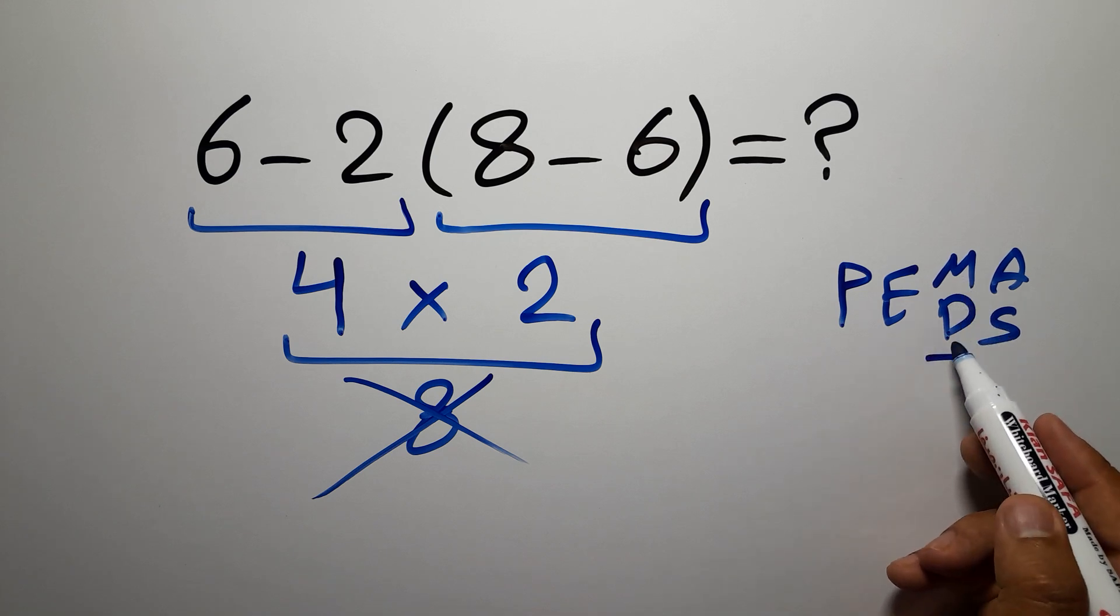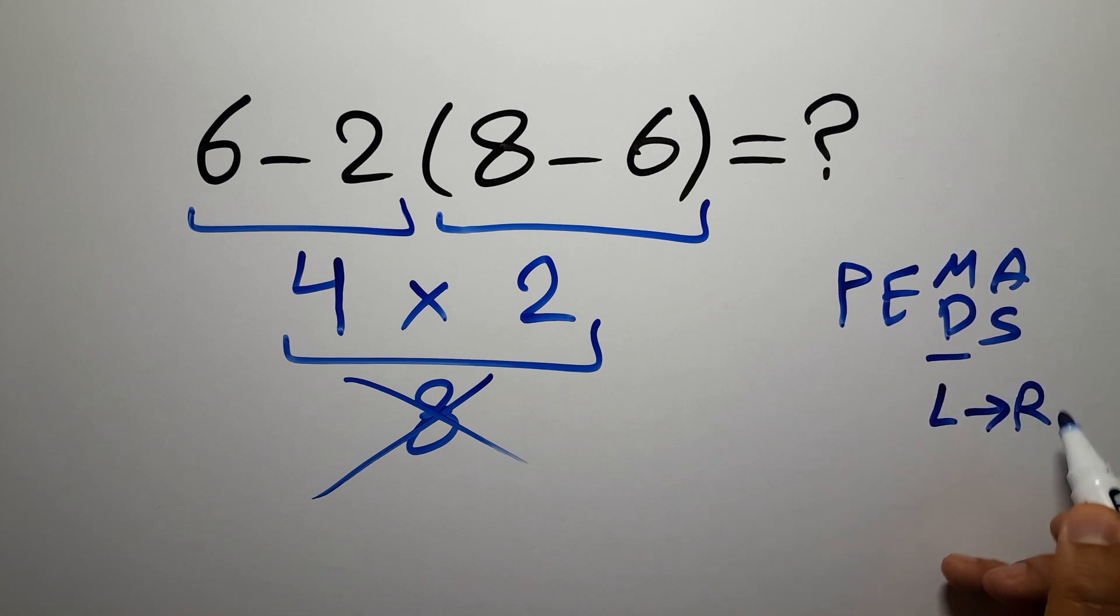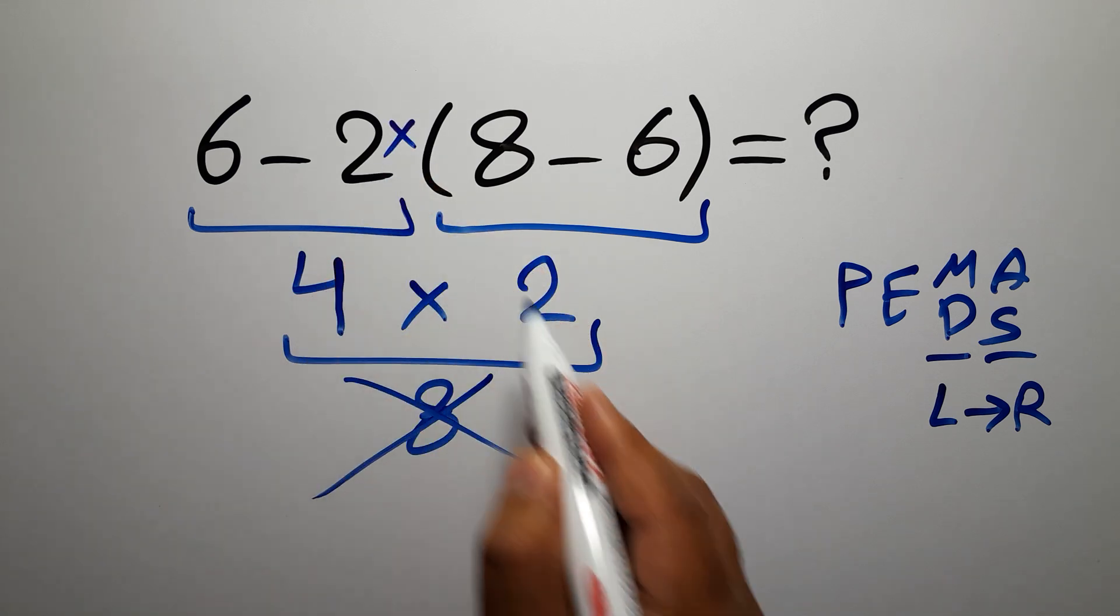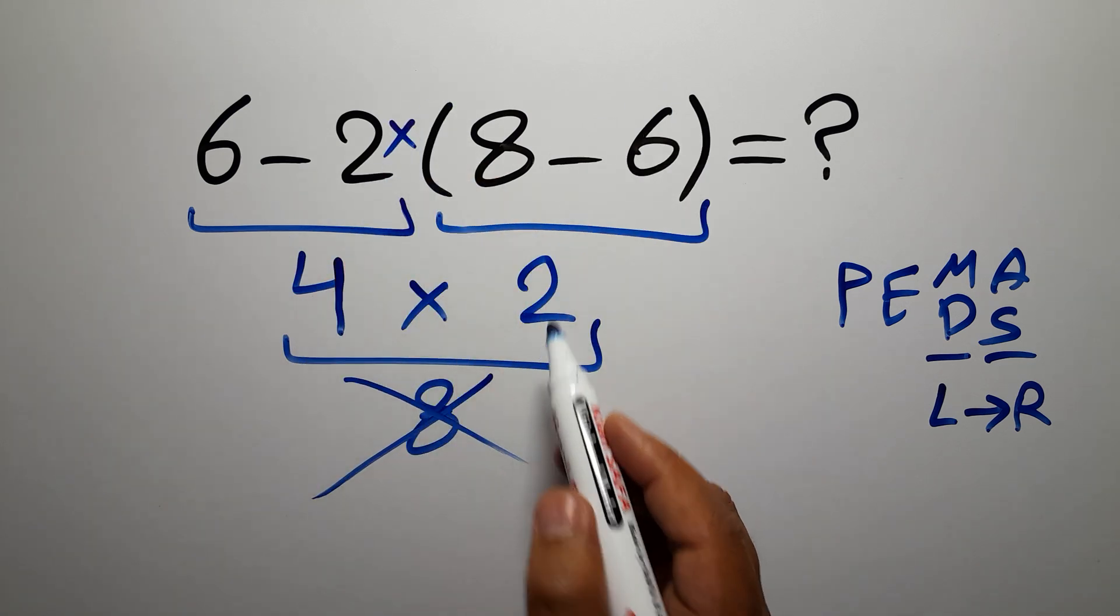Remember that multiplication and division have equal priority and we have to work from left to right, and the same applies to addition and subtraction. Here in this expression we have one subtraction, one multiplication, and one parentheses.